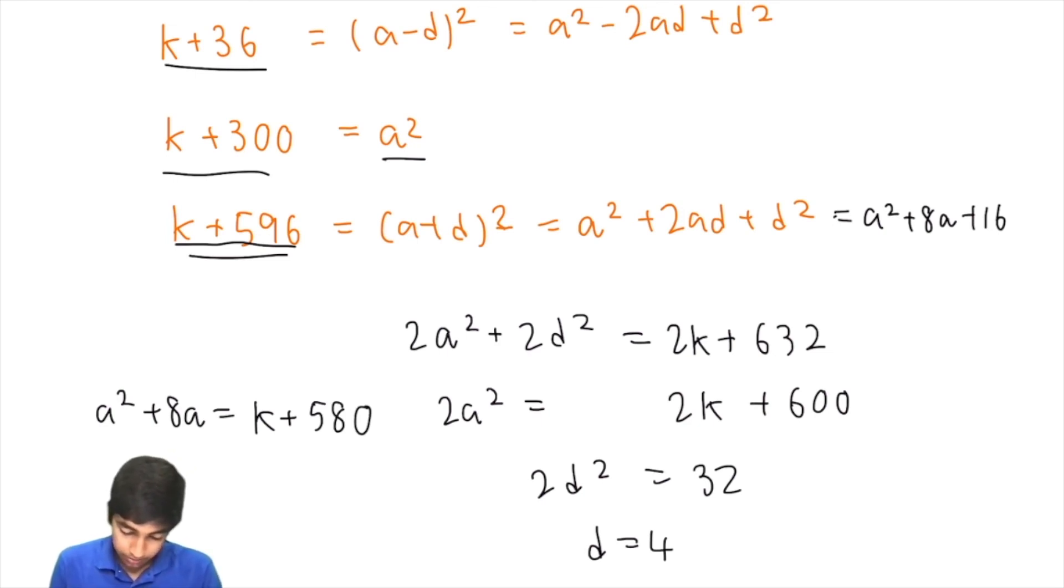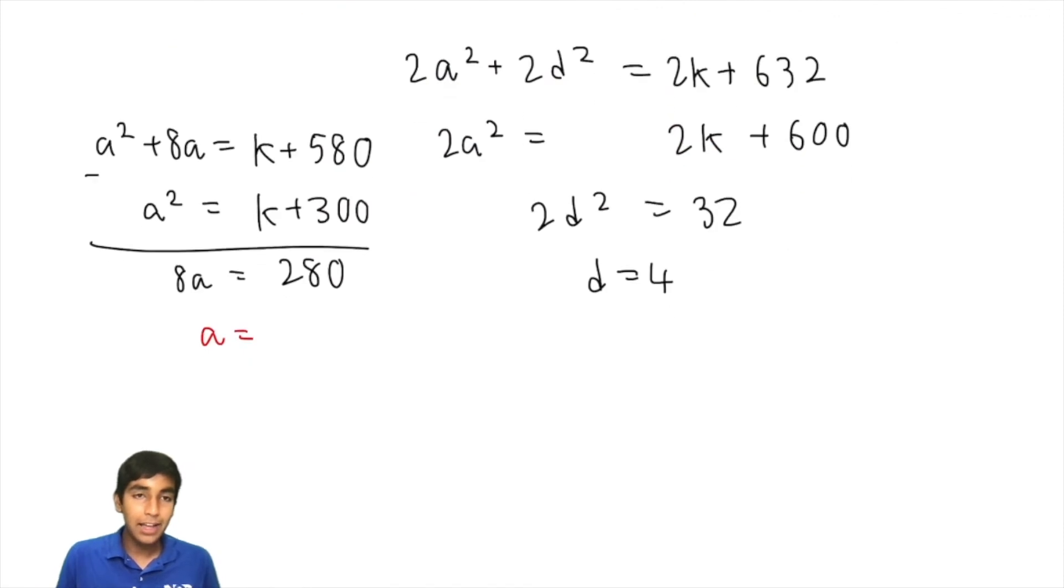Now, we also know that k plus 300 equals a squared. So, we subtract these equations to get 8a equals 280. So, that means a is 280 divided by 8, which is 35.